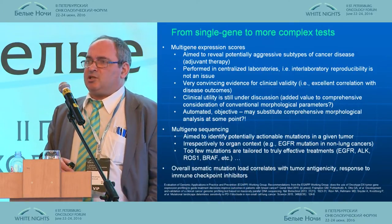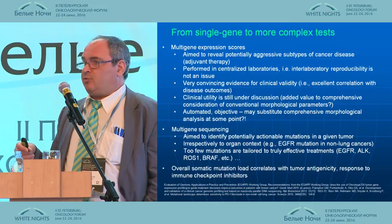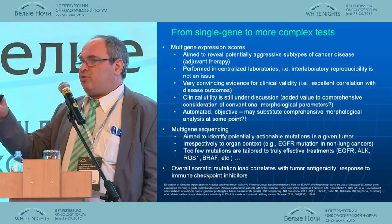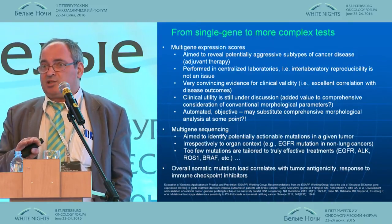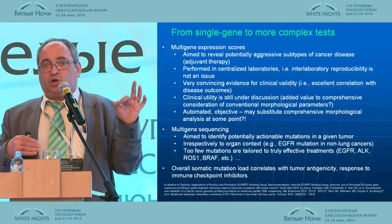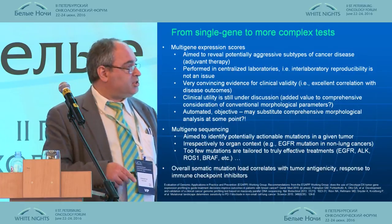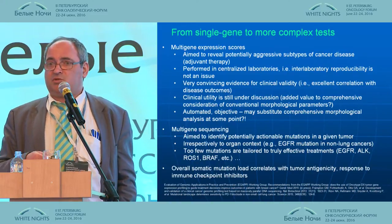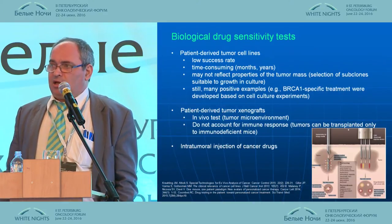Multi-gene sequencing panels aim to find actionable mutations in unusual tumor types not routinely subjected to single-gene testing — for example, uncommon tumors not tested for EGFR mutations. Additionally, the overall number of somatic mutations detectable by exome or whole genome sequencing correlates with response to immune modulators.